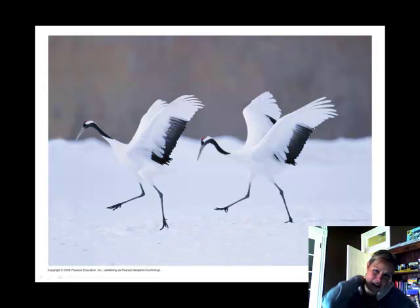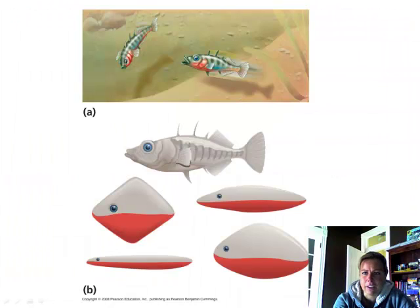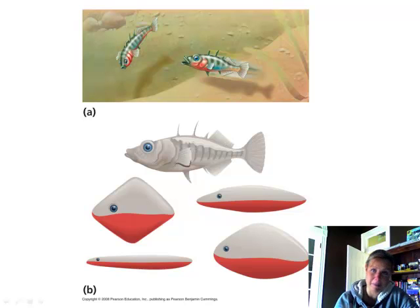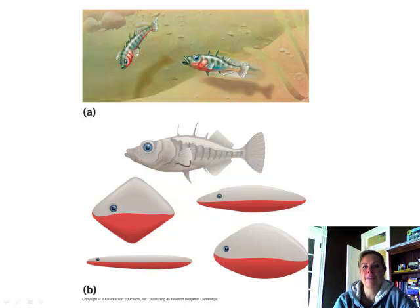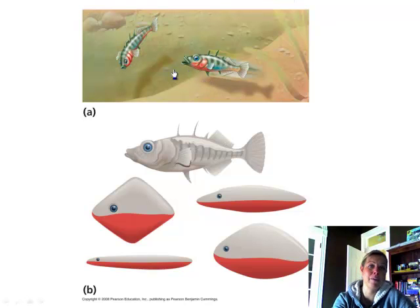The next types of behaviors we'll discuss are those that occur due to different stimuli — called fixed action patterns. This picture shows the male stickleback fish, which has a red belly. The males are very territorial and don't want other males mating with their partners. If another male comes into the territory, they will actually fight to the death.